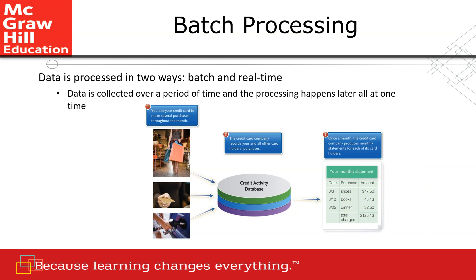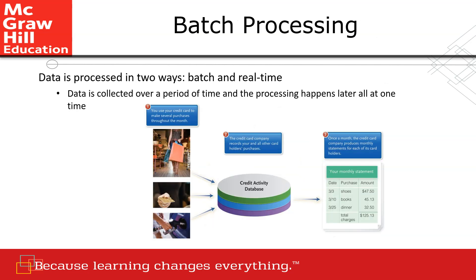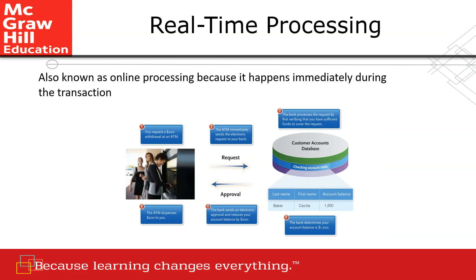Real-time processing is also known as online processing because it happens immediately during the transaction. For example, when you insert your ATM card in a bank ATM machine, this is real-time processing because as soon as you enter your PIN number it connects directly to the customer account database. If validated, you get approval and can deposit cash, a check, or withdraw money from the machine.